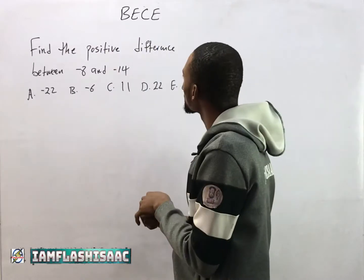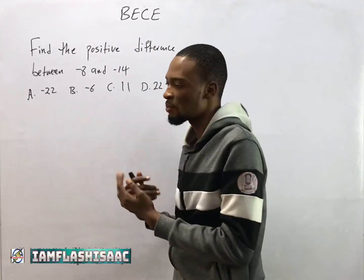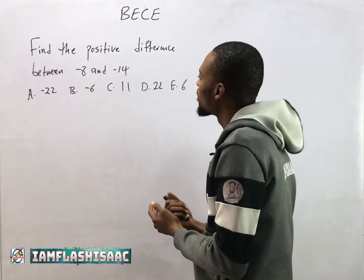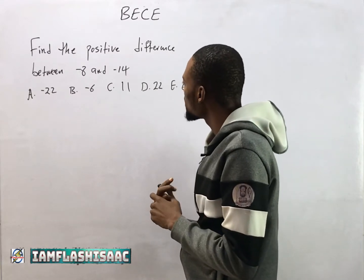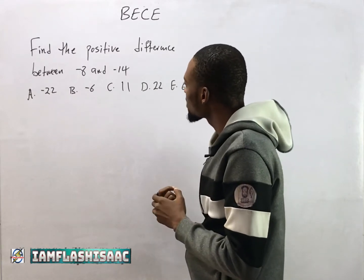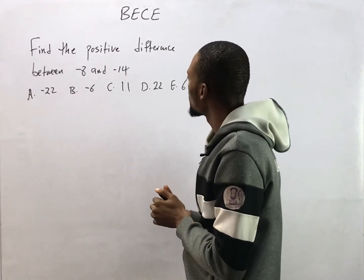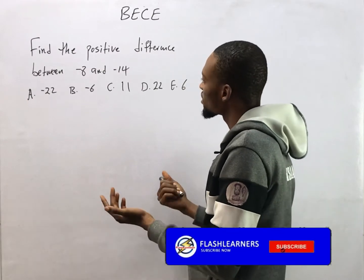Find the positive difference between minus 8 and minus 14. Option A: minus 22, B: minus 6, C: 11, D: 22, and E: 6.